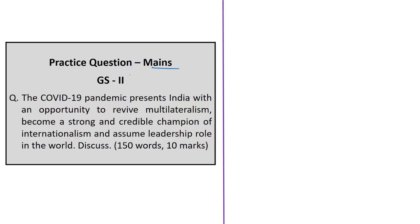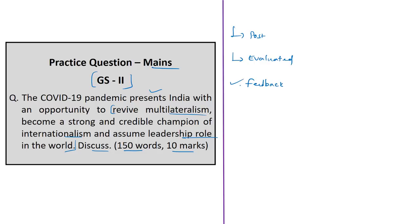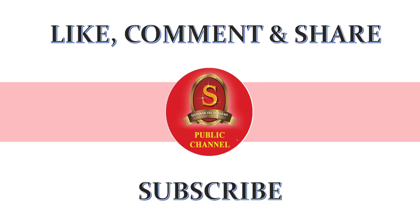The practice mains question in GS2 paper is: 'The COVID-19 pandemic presents India with an opportunity to revive multilateralism, become a strong and credible champion of internationalism, and assume a leadership role in the world. Discuss.' This is a 10-marks question to be written in 150 words. You can post your written answers in the comment section and your answers will be evaluated with suitable feedback given in a reasonable time frame. Thank you for watching Shankar IAS Academy's Hindu news analysis.